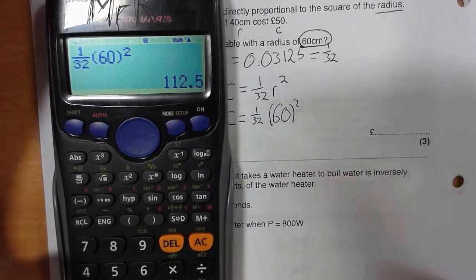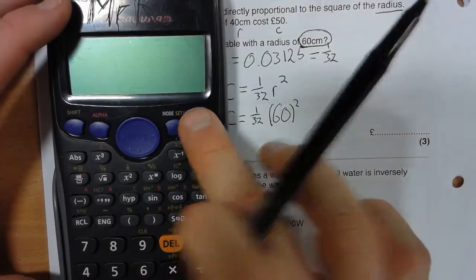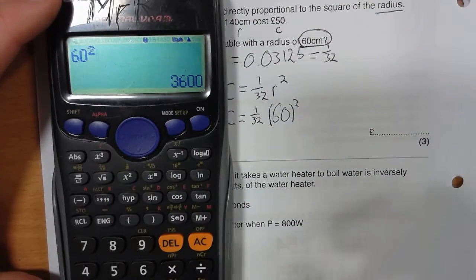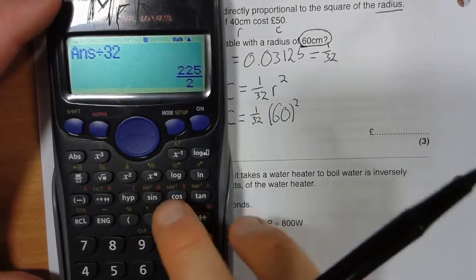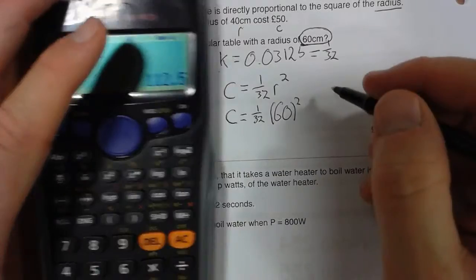I'm just going to check that by doing that independently. So if I take 60 squared, and then if I divide that by 32, I should get the same answer. Which I do, 112.5.